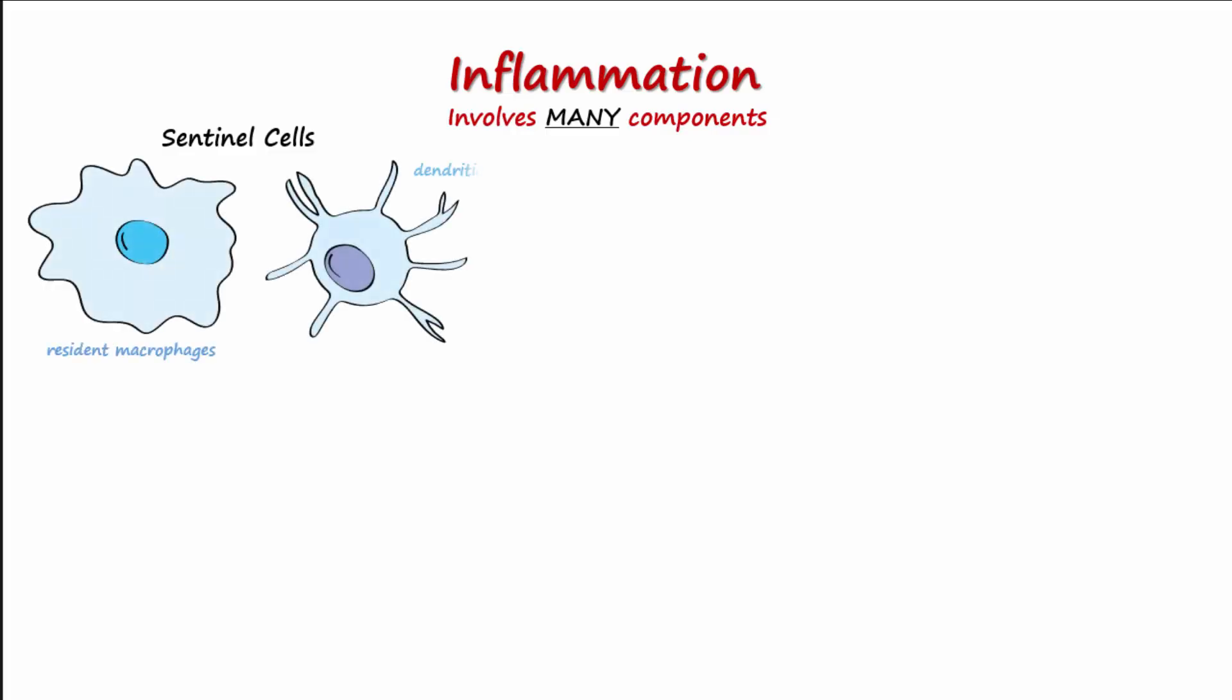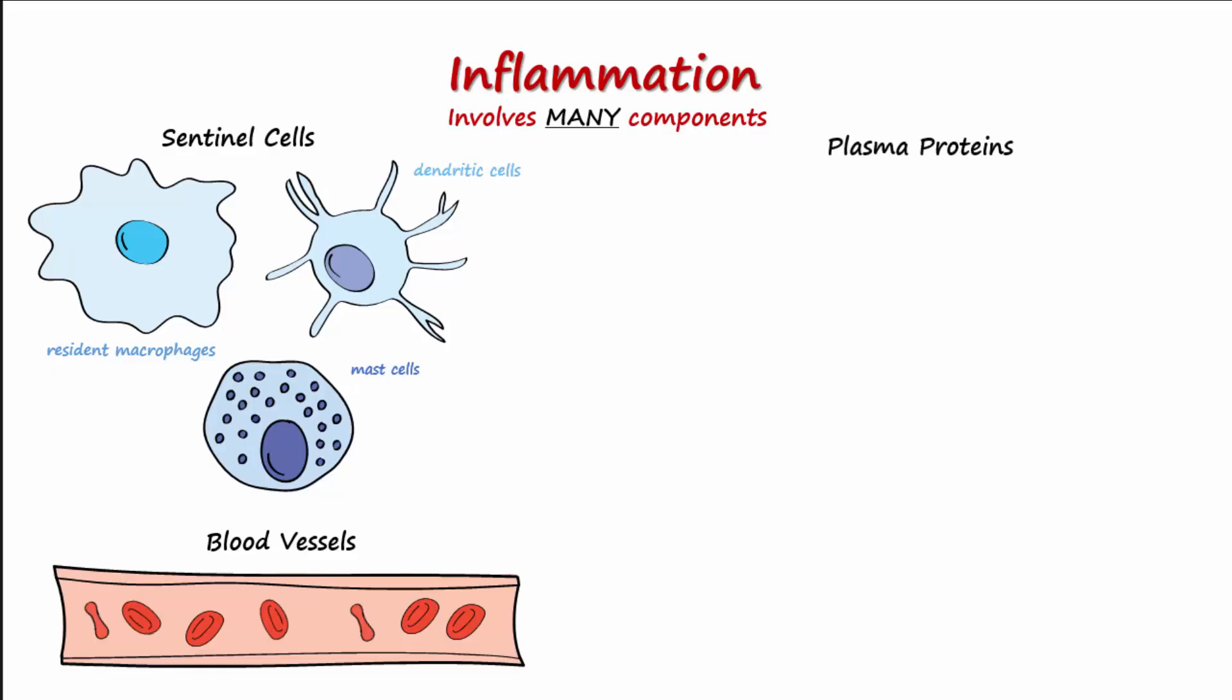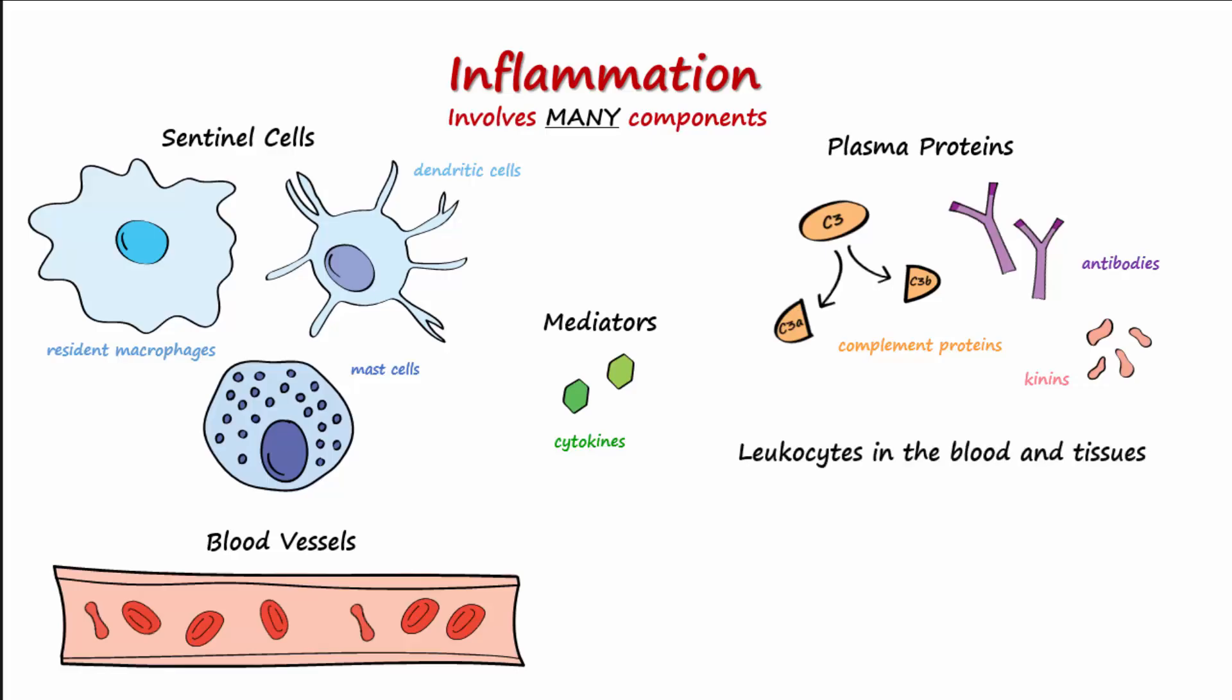Inflammation involves many components. These include sentinel cells such as resident macrophages, dendritic cells, and mast cells. Other components include blood vessels, plasma proteins like complement proteins and antibodies, and kinins like bradykinin. Also included are mediators released from cells like cytokines. And finally leukocytes in the blood that are brought into the tissues like monocytes, neutrophils, and eosinophils.